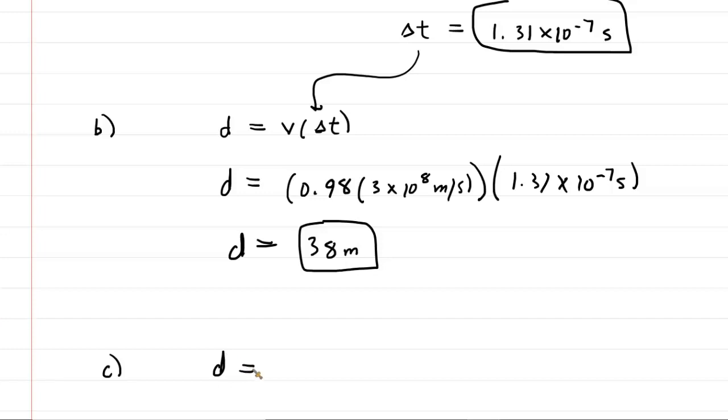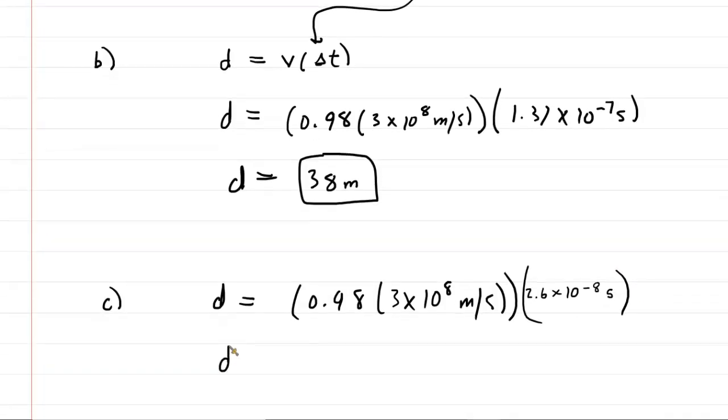So we'll just use the original time interval given by the question. We're still calculating the distance. So we're still going to take the speed of light, well, 98% of the speed of light that is, and then multiply it by that time interval as measured by the pi meson. And when we do so, we get a distance of approximately 7.6 meters. So this would be the distance if time dilation did not occur. And that is the correct answer to part c.